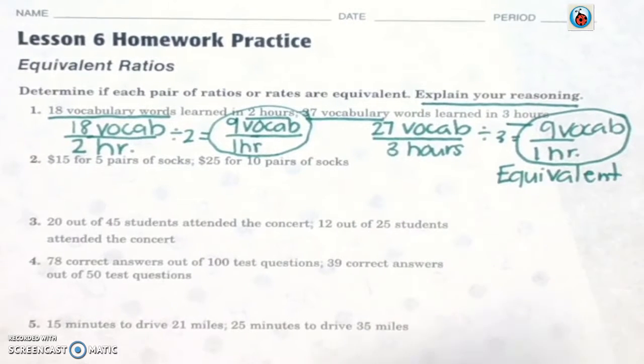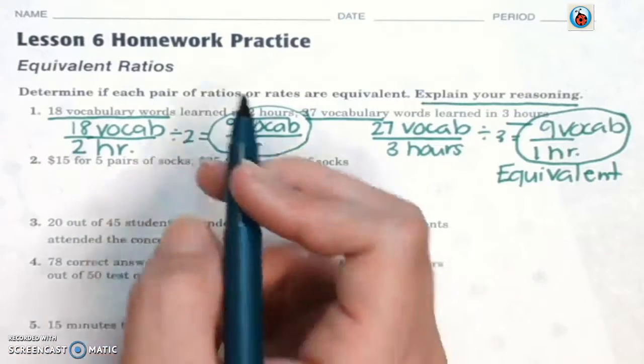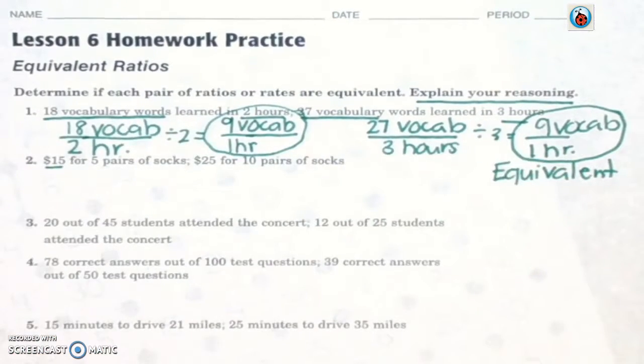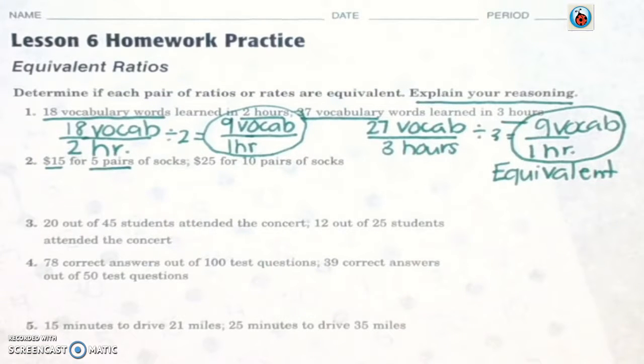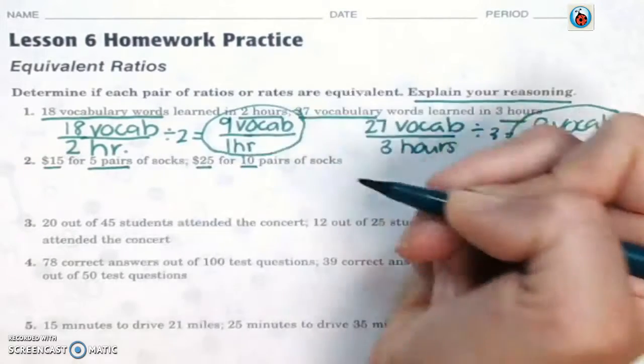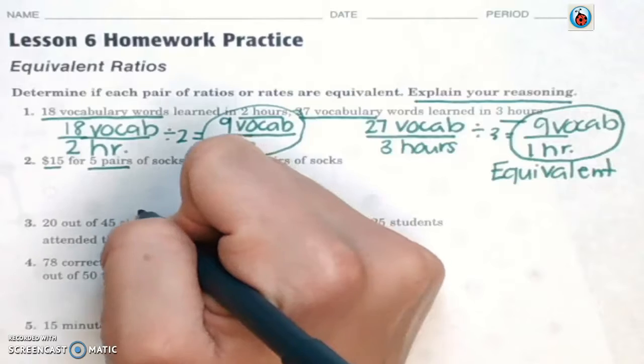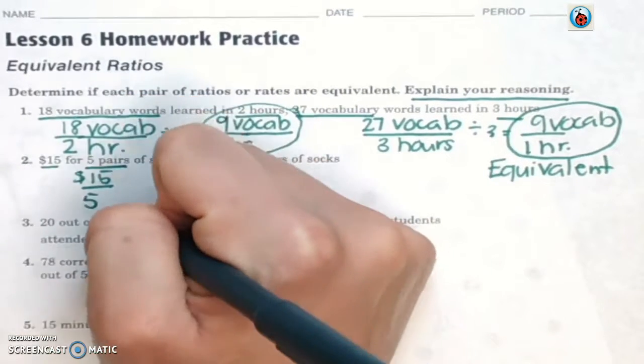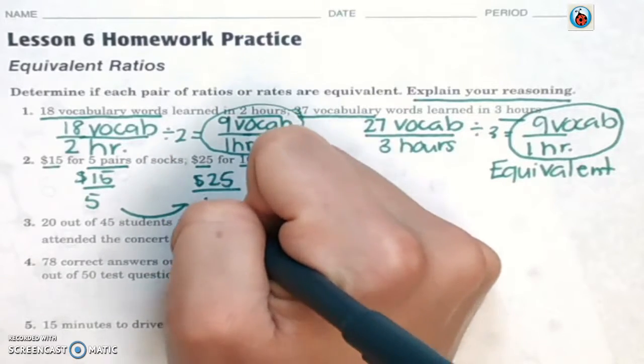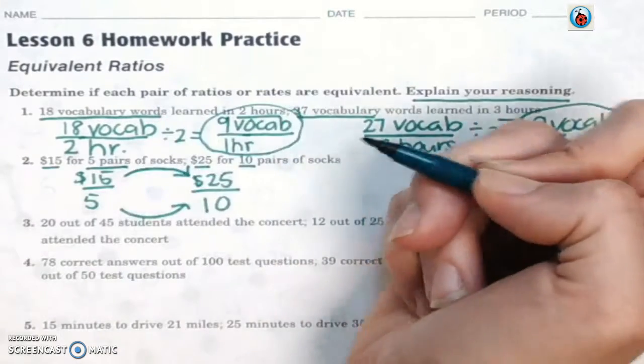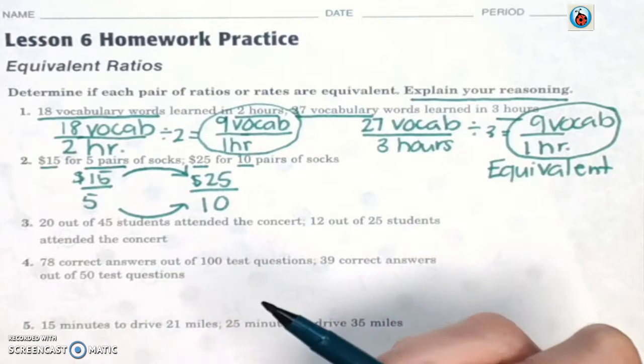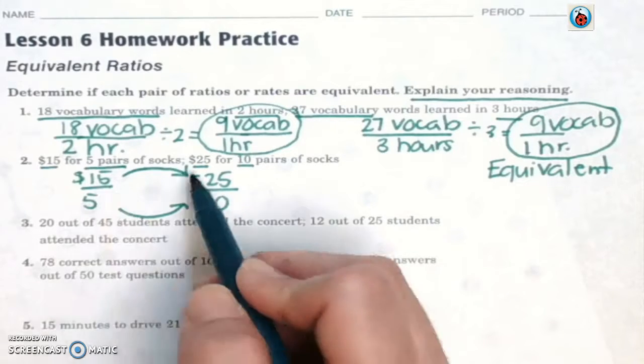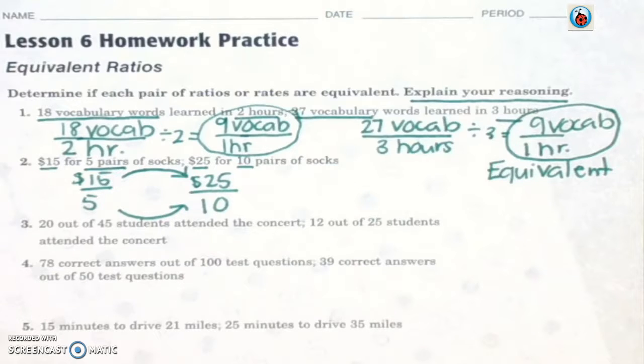If you need to write on a separate sheet of paper and transfer your answers over, that is fine. I'm going to highlight or underline important parts in your problem here. You have $15 for 5 pairs. That would be one ratio that you set up. And then the next one would be $25 for 10. And if I were you on this one, I would see to get from this side to this side. Make sure you are using your notes during this time to help you out. Remember, if it's the same number getting you from here to here, then that tells you if it's equivalent.